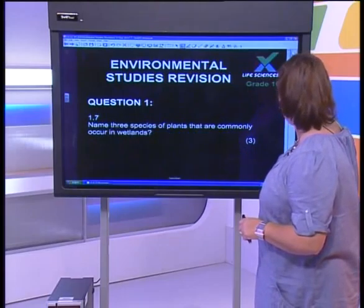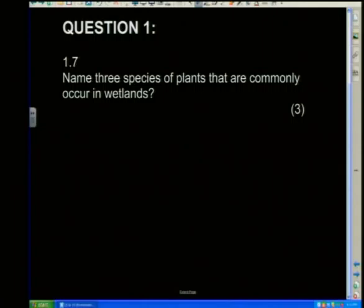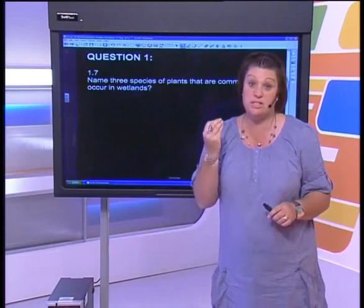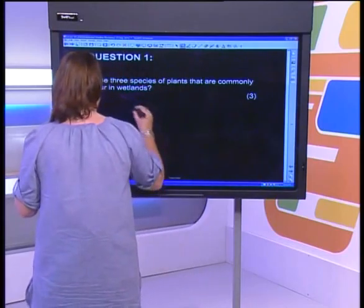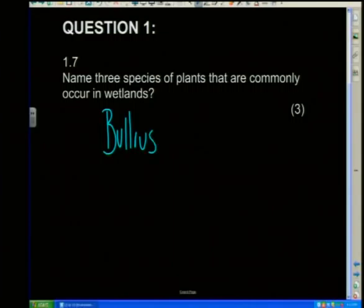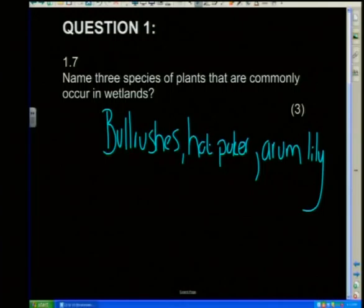Question seven: what three plant species occur in wetlands? It's very important to know which plant species are found in this area. Your three main ones are bulrushes, the red hot poker — a lovely yellow and red flower that almost looks like an aloe — and the arum lily. These are the three flowers predominant in wetland areas.